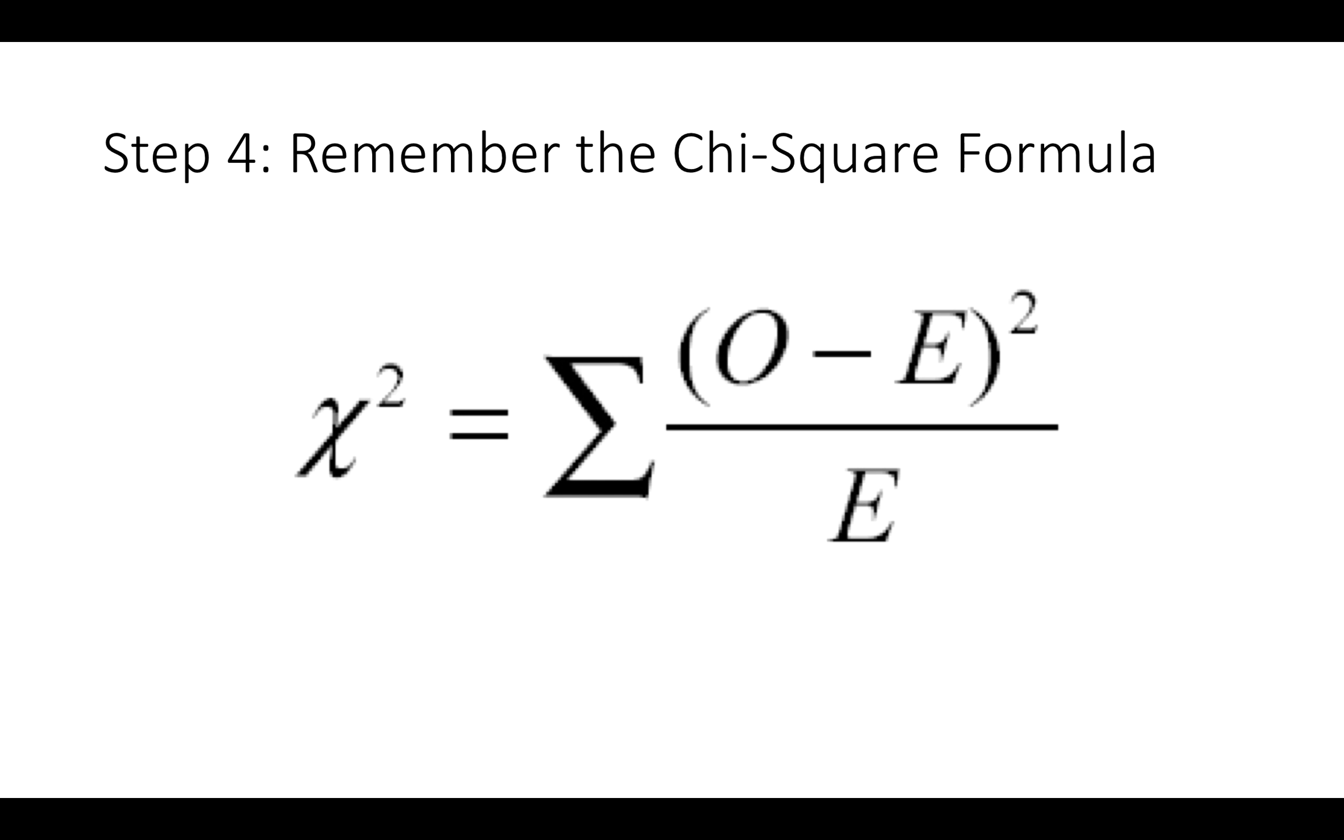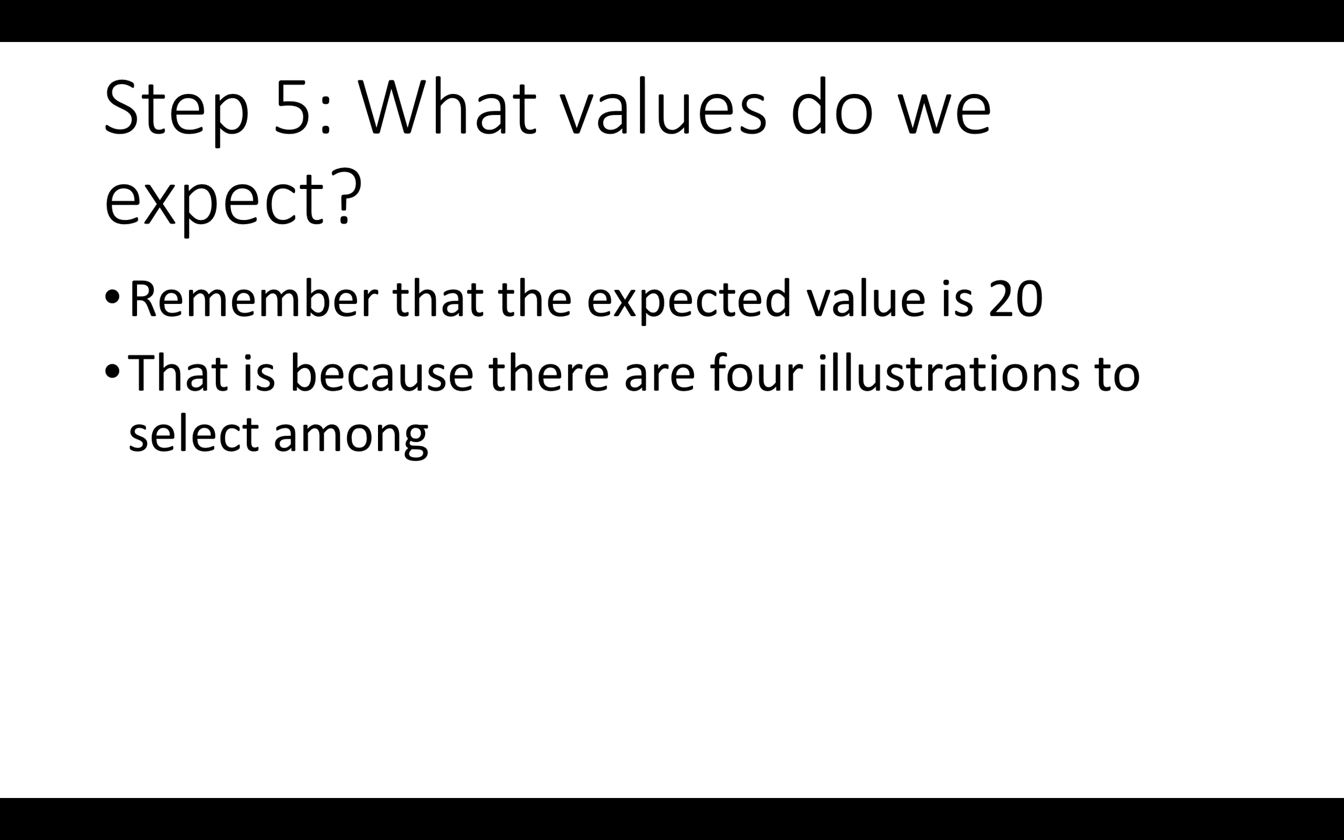Now we're going to remember the chi-square formula. We are looking at the frequencies observed values and comparing them to the expected values if the null hypothesis were true. Then we're adding all of these together, squaring them, and dividing them by the expected value to see if our sample is significantly different from what proportions are expected. So what values do we expect? Remember that we have 80 data points and we have 4 books. So the expected value is 20.